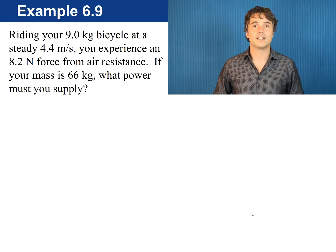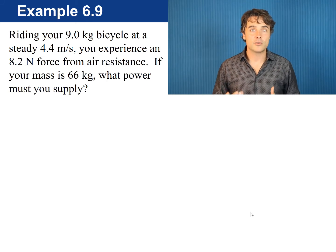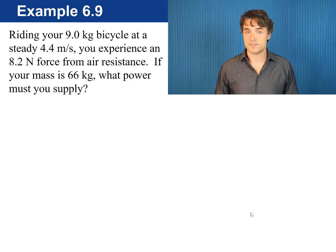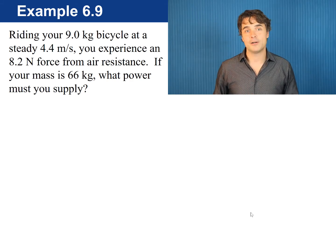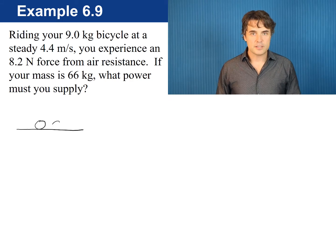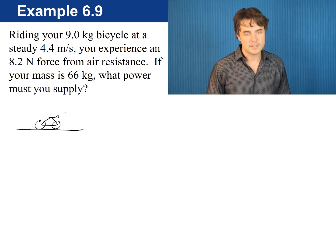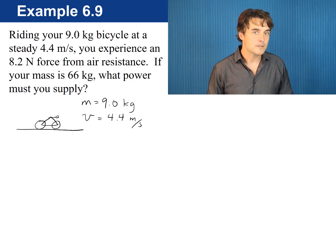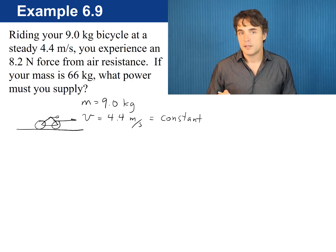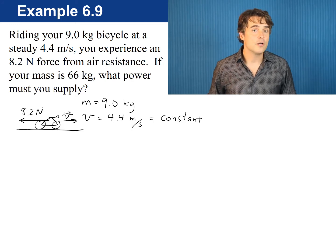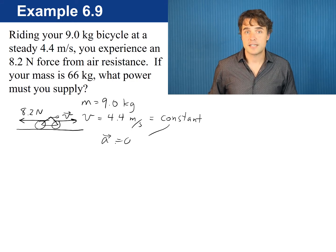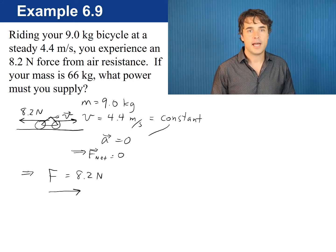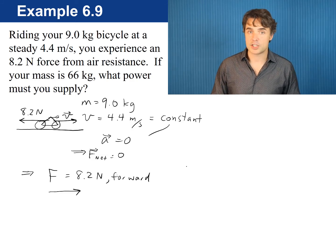Now, let's do a quick example. Riding your 9 kilogram bicycle at a steady 4.4 meters per second, you experience an 8.2 newton force from air resistance. If your mass is 66 kilograms, what power must you supply? Okay, so let's draw this bicycle and list our knowns. The mass is 9 kilograms and the velocity is 4.4 meters per second is constant. And there is a backwards force of air resistance of 8.2 newtons. So, if the velocity is constant, the bike is not accelerating. So, the net force must be zero. That means the cyclist must be supplying a forward force which works against air resistance and balances the forces. So, let's draw that force here as f equals 8.2 newtons forward in the same direction as the constant velocity v.